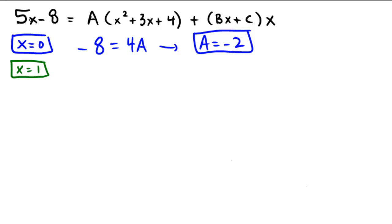And if I plug that in on the left, 5 minus 8 is negative 3. Let's see here. 1 plus 3 is 4, plus 4 is 8 times A. And A was negative 2, so 8 times negative 2 is negative 16.